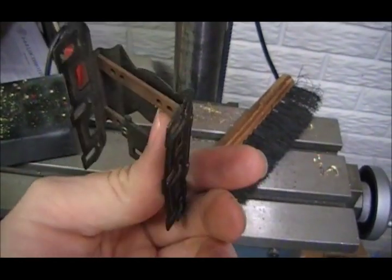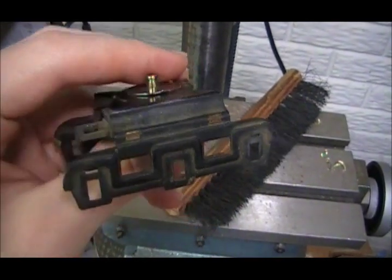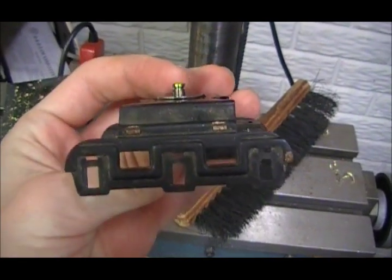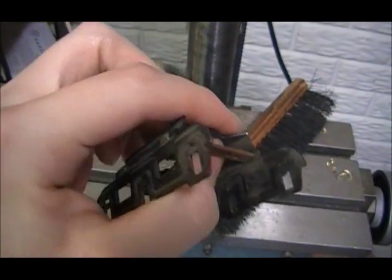Before I do anything else I'm going to clean this up in the sink with soap and water. That will get rid of any dirt and dust that's on there and then I'll see for sure if it needs any more work with the wire wheel.